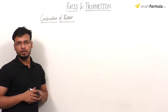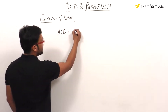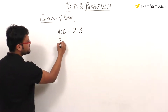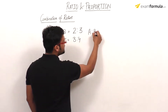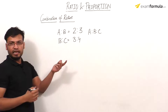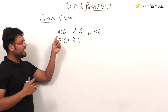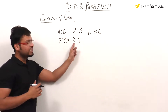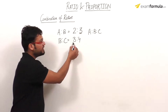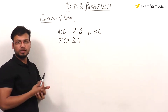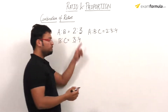The next topic is the combination of ratios. I have two numbers: A ratio B is given as 2 ratio 3, and B ratio C is given as 3 ratio 4. I am asked what is A ratio B ratio C. This is why the topic is called combination of ratios. Since the B value in the first ratio is 3 and in the second ratio is also 3, I can easily equate the two equations, so A ratio B ratio C is 2 ratio 3 ratio 4.